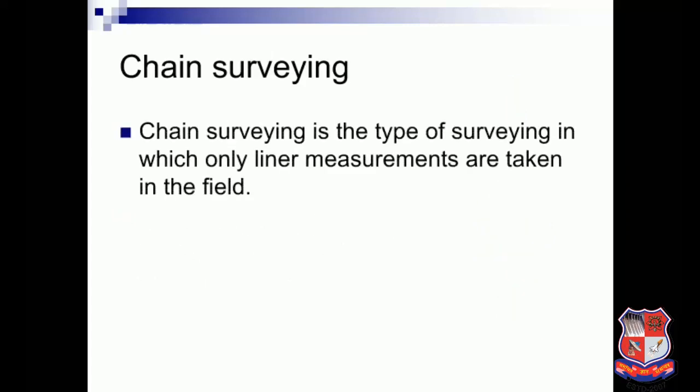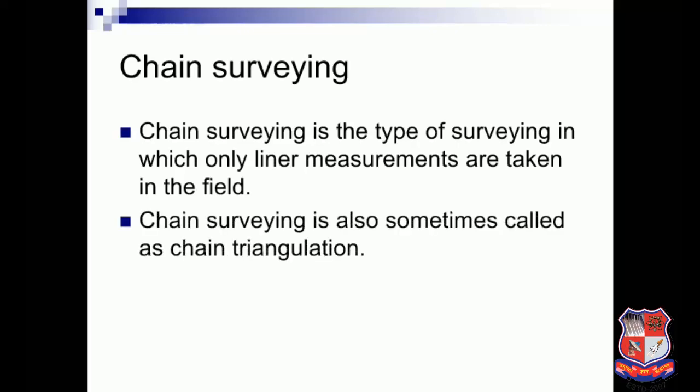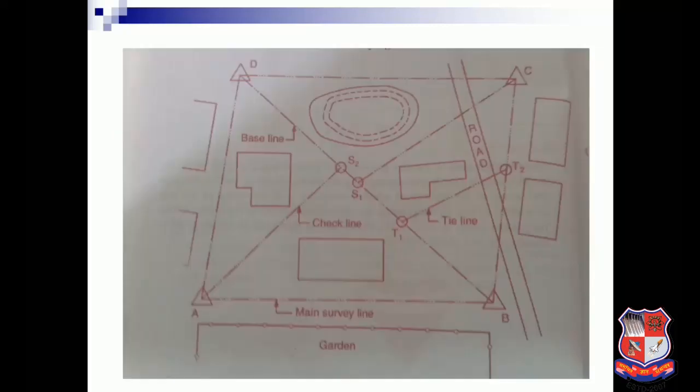Chain surveying is the type of surveying in which only linear measurements are taken. If we consider only linear measurement, then we perform chain surveying. Chain surveying is also sometimes called chain triangulation. The main survey lines include the baseline, check line, and tie line.